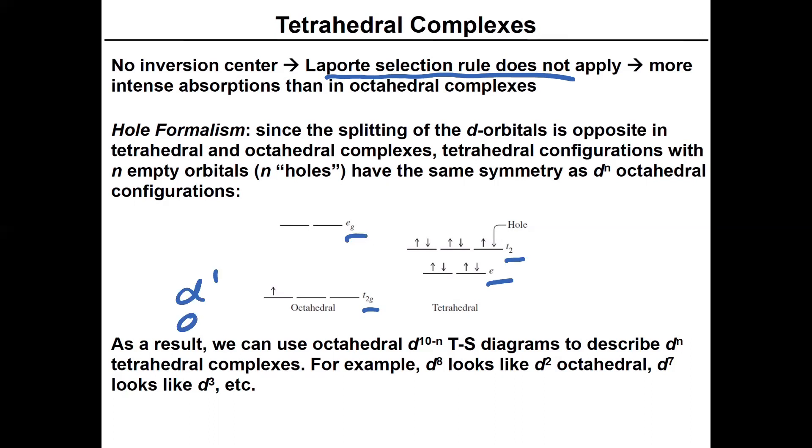See how we have a D1 octahedral configuration on the left and on the right, we have a D9 tetrahedral configuration. So what happens is we also know something else, is that if this is Δ_O, we know that that splitting is about four-ninths Δ_O, partially because there's four ligands with respect to six. But let's think about what this means in terms of the electronic spectroscopy. So since the splitting of the D orbitals is actually opposite between tetrahedral and octahedral, meaning their effective symmetry labels are flipped over.